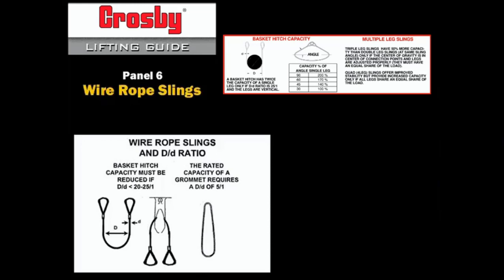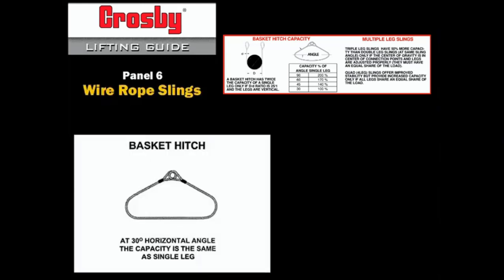If a wire rope basket hitch is formed around an object that has the same diameter as the wire rope, the basket hitch capacity is no more than the single leg capacity. At a 30 degree horizontal angle, the capacity of a basket hitch is the same as single leg.